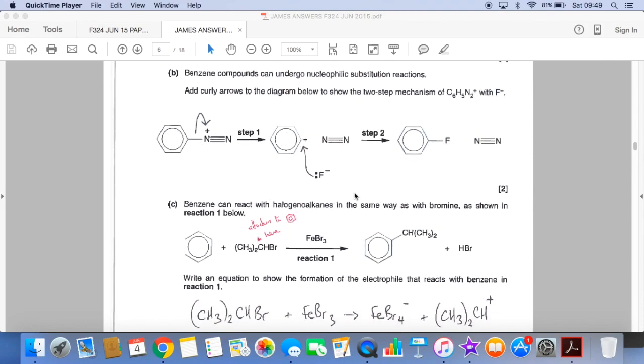The curly arrows that we had to add. So we would have a pair of electrons going from this bond here and they'd be attracted to that N plus, and the other curly arrow from the lone pair on the F minus to the positive charge on this.